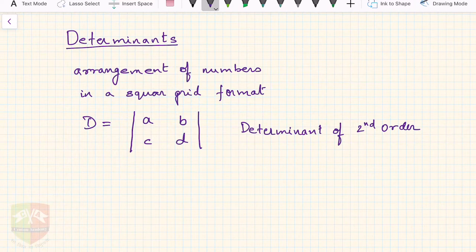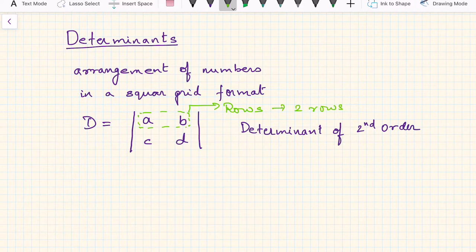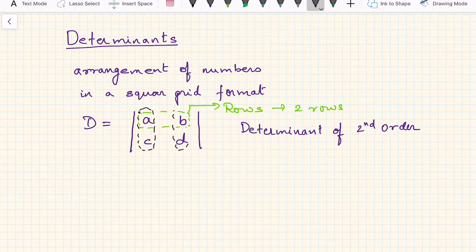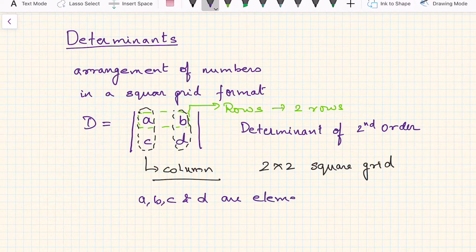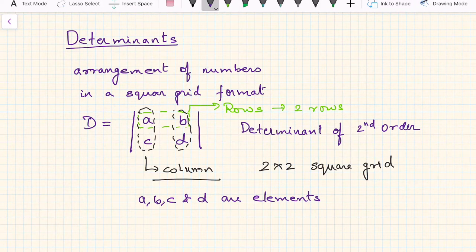These are called the rows. How many rows are there? There are two rows in this case. And this is called a column — there are two columns. So you can see this is a 2×2 square grid. The individual members a, b, c, and d are called elements of this determinant — four numbers placed in that order, with no operation happening, just plain placement in a 2×2 square grid structure.